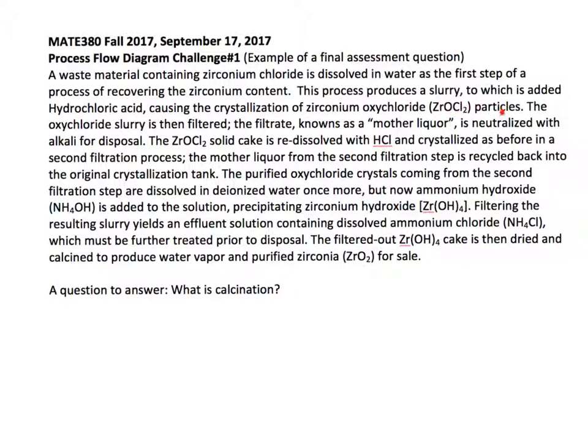Let me sketch what I have in my mind at this point. I have something where I'm adding a waste material containing zirconium chloride ZrCl, which is dissolved in water. That creates a slurry and that slurry goes into a vat where you've added acid, and you get some sort of recrystallization.